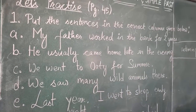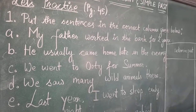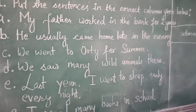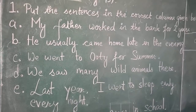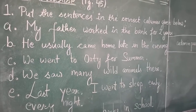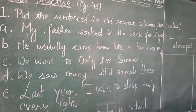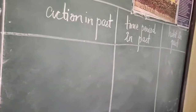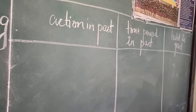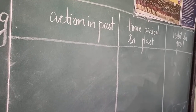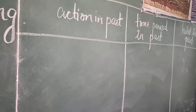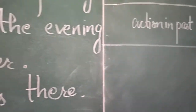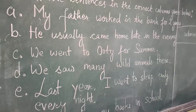In question number 1, put the sentences in the correct columns given below. There is a column in your book given below, and here are the sentences A to F. What you need to do is put the correct sentences in the column. Three columns are given if you go through your book — Action in past, Time period in past, and Habit in past.